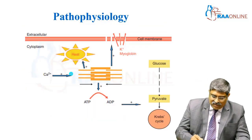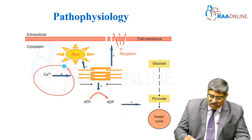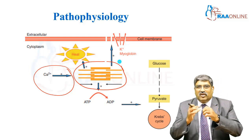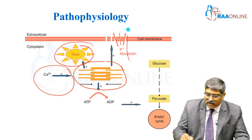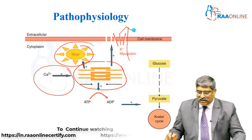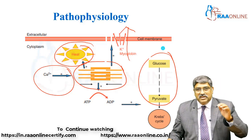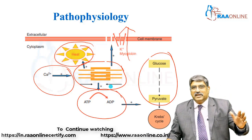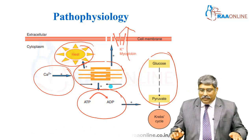So, calcium is highly available in the cytoplasm. The muscle undergoes sustained contraction and becomes rigid. Heat is generated. Potassium and myoglobin move extracellularly, and there is glucose metabolism occurring. Initially there will be high generation of ATP, and later ATP is depleted.